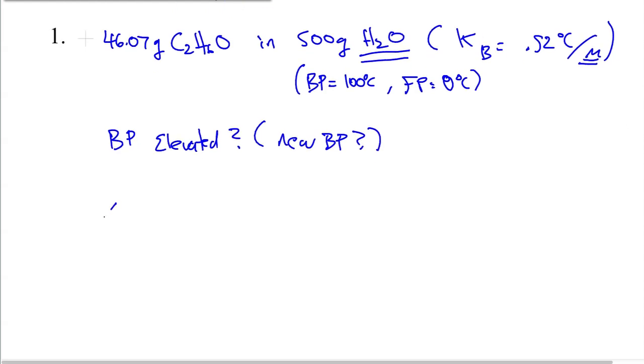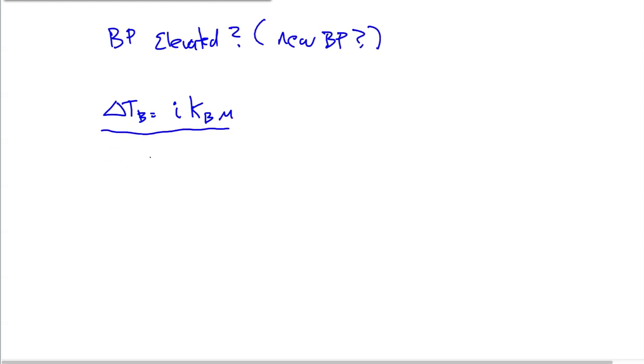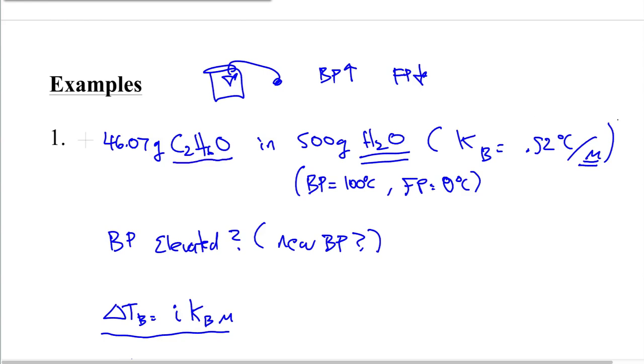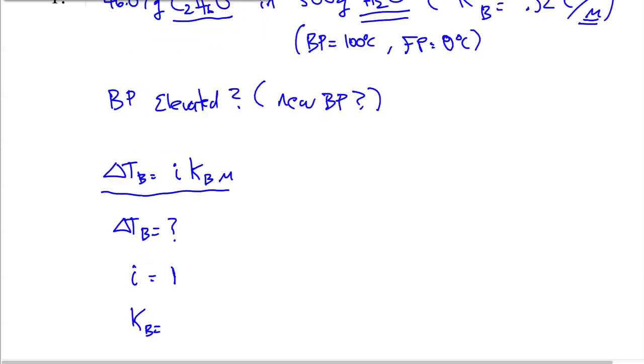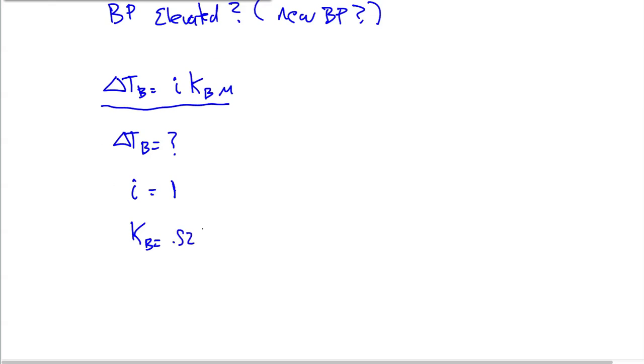And we know that for water, since we're dealing with water here, the initial boiling point is 100 degrees Celsius, and its initial freezing point is 0 degrees Celsius. And this question is actually going to ask us, how much is the boiling point elevated? Or we could say, what is the new boiling point? Let's ask both of those questions. So we're going to use the boiling point equation, delta T_B equals I K_B molality. So let's go through and let's write out everything. This is what we're looking for. That's the boiling point elevation.